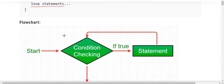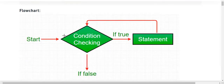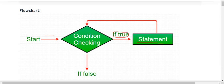The flowchart of a while loop starts, then we have our condition check. If the condition is true, then we execute the statement, and then again the loop restarts. If the condition is false, then we exit the program.